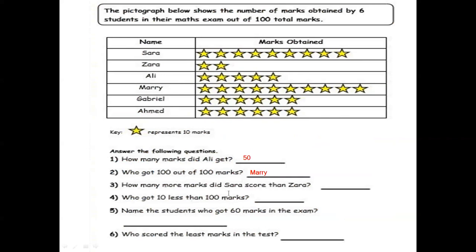How many more marks did Sarah score than Zara? First, how many marks did Sarah get? Sarah has 9 stars, so 90 marks. Mary got 100 marks. So 100 minus 90 equals 10. You won't get such difficult questions — this is just for understanding. This is how you read a pictograph.